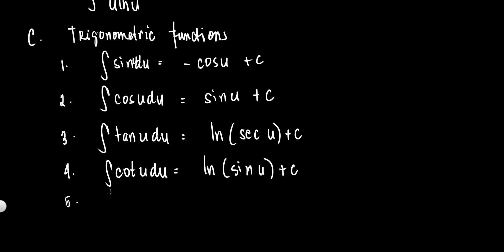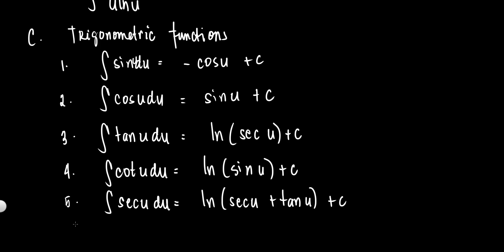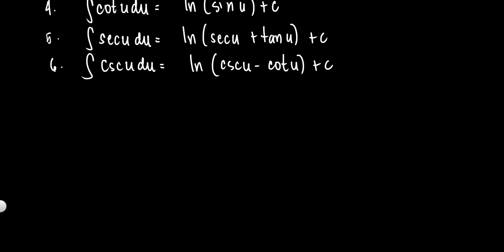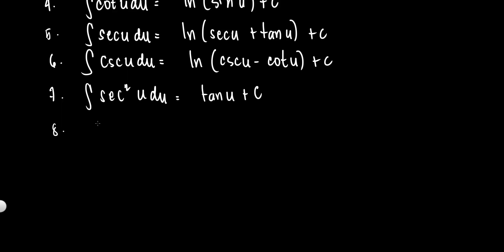Number five: the integral of secant u du is equal to ln of (secant u plus tangent u) plus c. Number six: the integral of cosecant u du is equal to ln of (cosecant u minus cotangent u) plus c. Number seven: the integral of secant squared u du is equal to tangent u plus c. Number eight: the integral of cosecant squared u du is equal to minus cotangent u plus c.